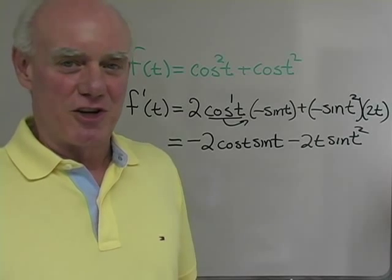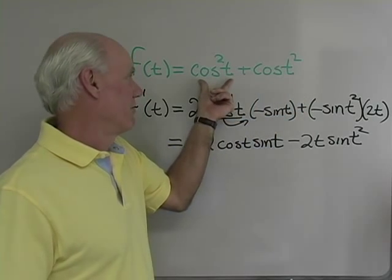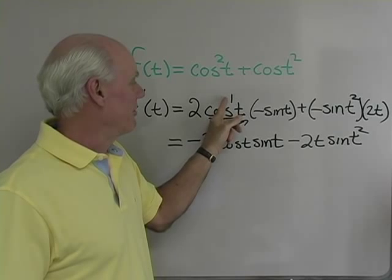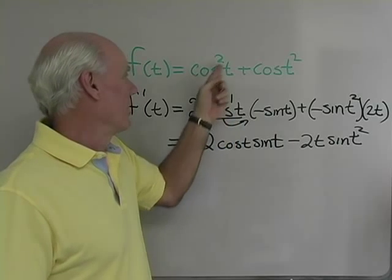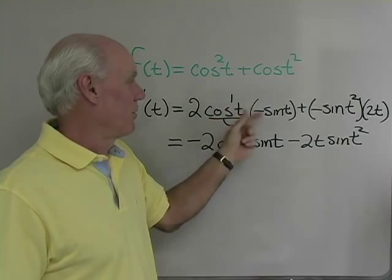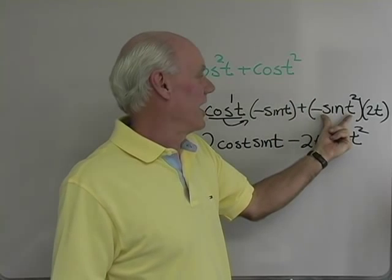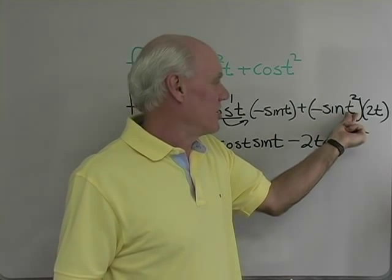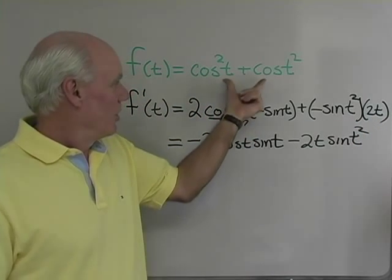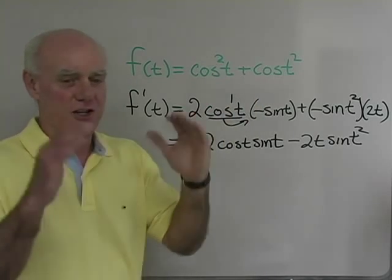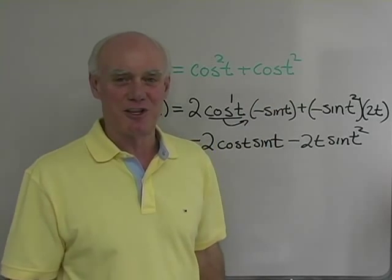One more problem: differentiate cos squared t plus cos of t squared. For the first term, I take the exponent 2 out in front, keep the base cos t, raise it to the first power, then differentiate the base to get negative sine t. For the second term, I differentiate cosine of t squared: negative sine of t squared, then by the chain rule differentiate t squared to get 2t.